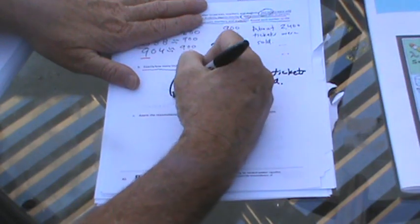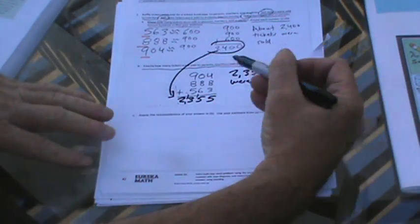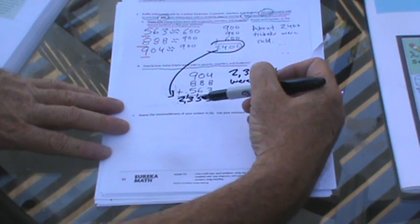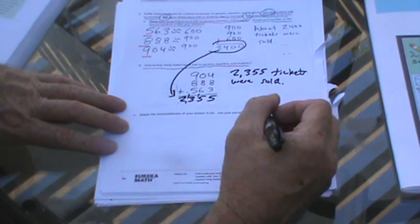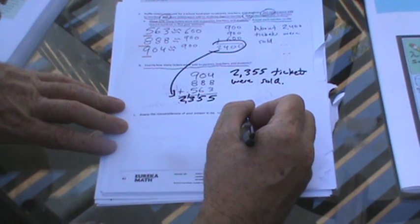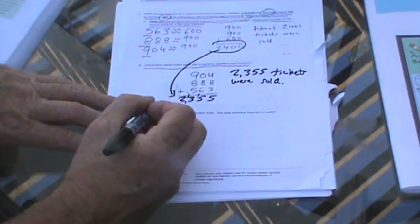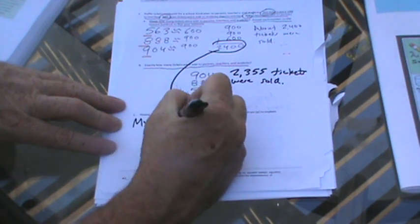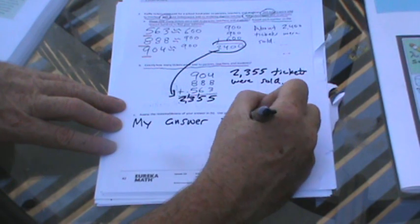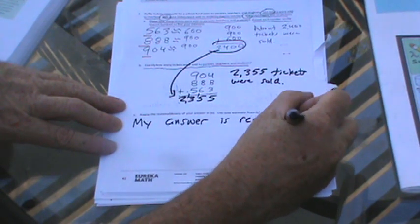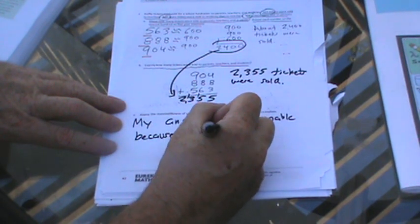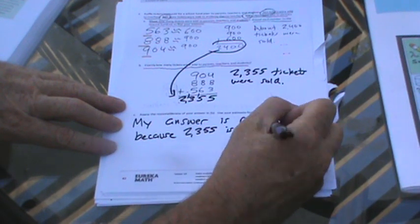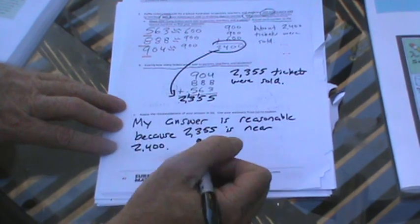Now, is our answer reasonable? Let's take a look back at 2,400 and at 2,355. It's only 45 off, so it's pretty reasonable. It says, assess the reasonableness of your answer using your estimate from A. My answer is reasonable because 2,355 is near 2,400.